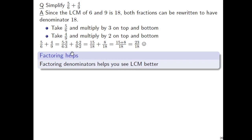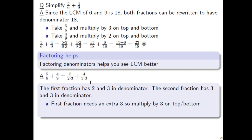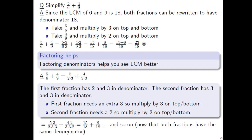Factoring the denominators will help you see the LCM better. Here's a second approach: instead of computing the LCM separately first, rewrite the 6 in the first denominator as 2 times 3, and the 9 in the second as 3 times 3. The first fraction has a 2 and a 3 in the denominator; the second has two 3's. The second fraction has an extra factor of 3, so we multiply the first by 3 on top and bottom. The second is missing a 2, so we multiply by 2 on top and bottom.